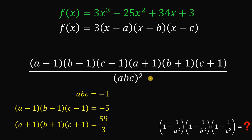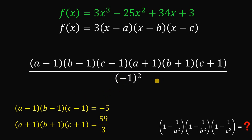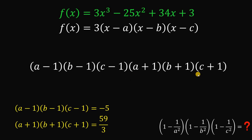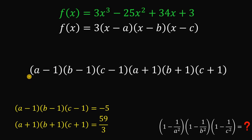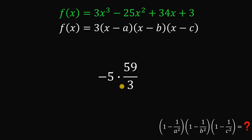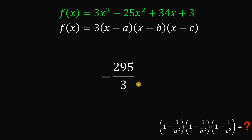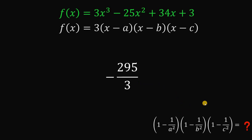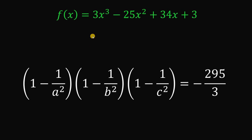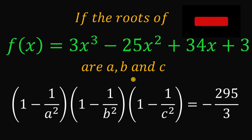Now we have all the pieces. The denominator (abc)² = (-1)² = 1. The expression simplifies to the product of (a - 1)(b - 1)(c - 1) and (a + 1)(b + 1)(c + 1), which is (-5) × (59/3) = -295/3. Therefore, if the roots of this function are a, b, and c, the numerical value of the expression is -295/3.